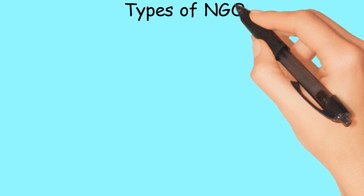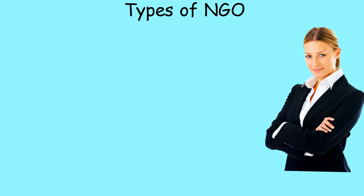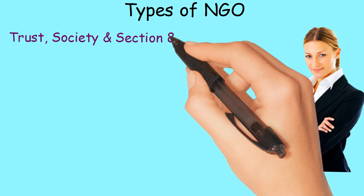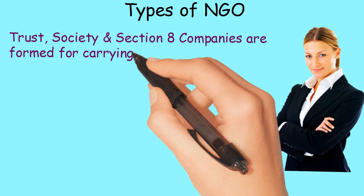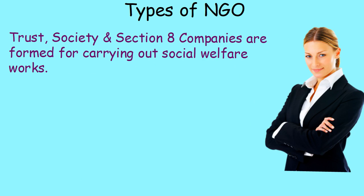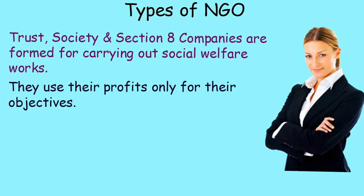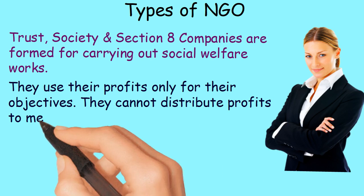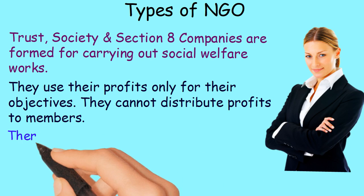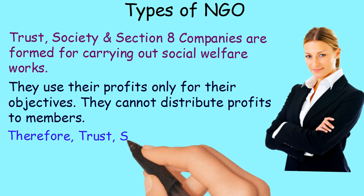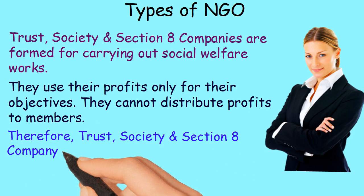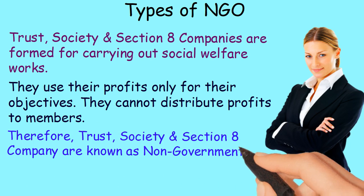Types of NGO: Trusts, Society, and Section 8 Companies are considered as NGOs as they are non-profit organizations. They are formed for carrying out social welfare works. They use their profits only for their objectives and cannot distribute profits to members. Therefore, Trusts, Society, and Section 8 Company are known as Non-Governmental Organizations.